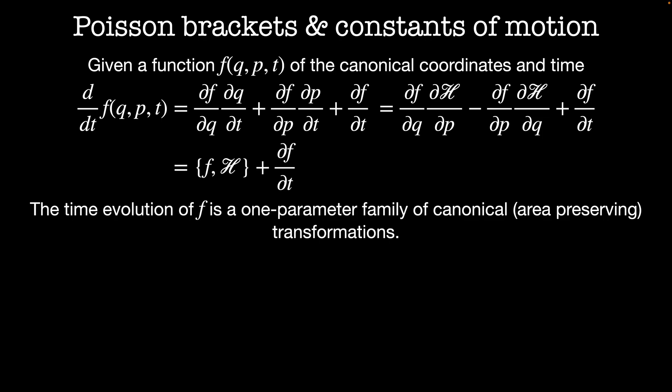That means the time evolution of a region in phase space is given by this formula. There's additionally a relationship between the total number of degrees of freedom — the number of q's and p's — and the number of constants of motion. Each constant of motion effectively removes one degree of freedom from the system. So if we start with a system with n degrees of freedom and k constants of motion, the system behaves as if it has n minus k degrees of freedom, and we only have to solve for the dynamics on a lower-dimensional sub-manifold within phase space. This is the generalization of the notion of ignorable coordinates.